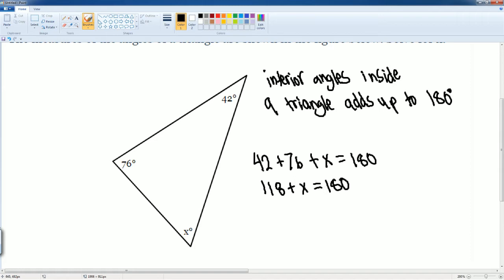Then we subtract 118 from both sides. As a result, this cancels and we get X equals 180 minus 118, which equals 62 degrees. So this angle measurement here is 62 degrees.